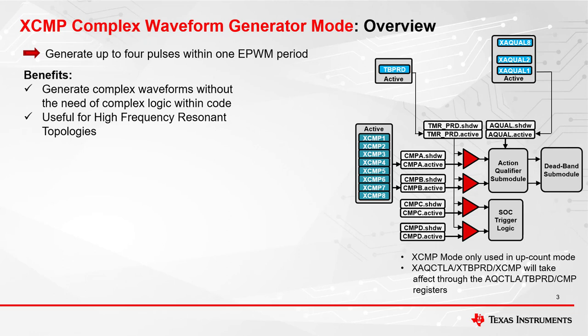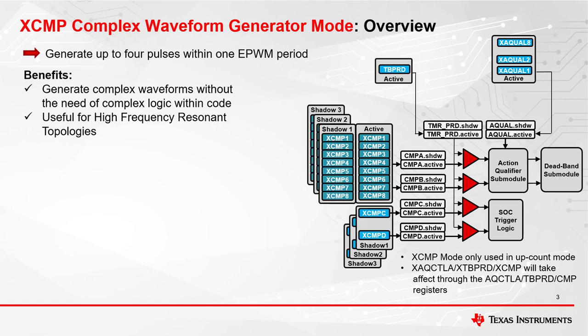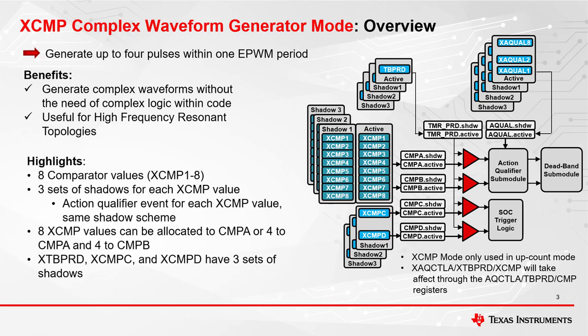In Type 4, we had just one level of shadowing our active registers. Now in Type 5, there are up to three shadow register sets, which exist for CMPA, CMPB, CMPC, and CMPD, as well as our time-based period and our action qualifier settings. When XCMP mode is disabled, the EPWM module will behave like Type 4 EPWM.